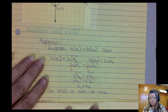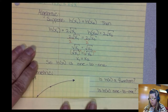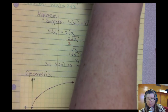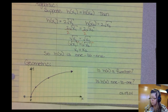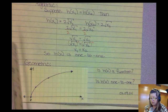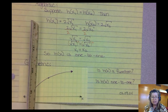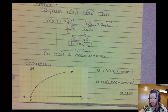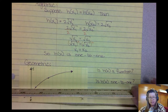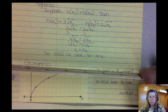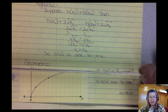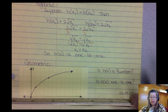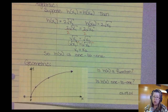Geometrically, let's graph h of x equals 2 times the square root of x and see if it's a one-to-one function. It passes the vertical line test all along there, so it is a function. And looking at where the ruler crosses the function, it's in one place at any one time — therefore this is a one-to-one function.